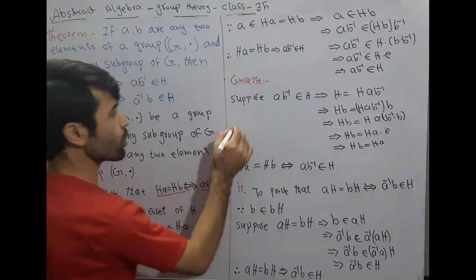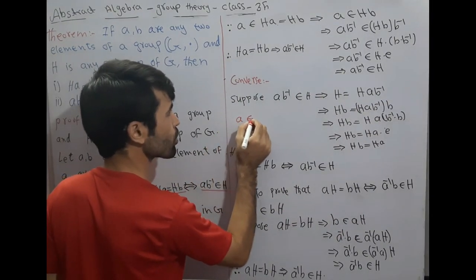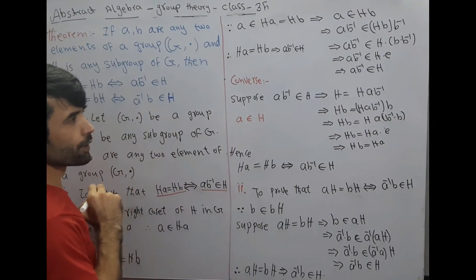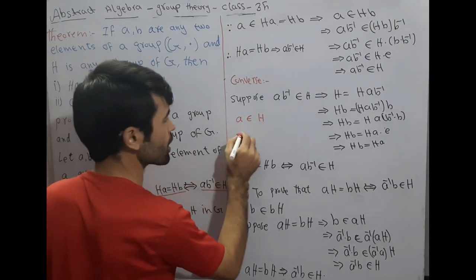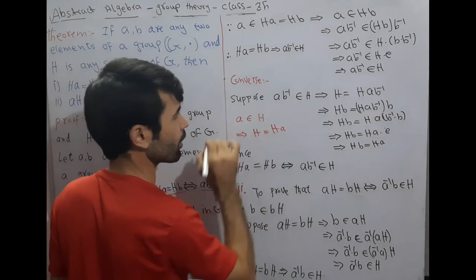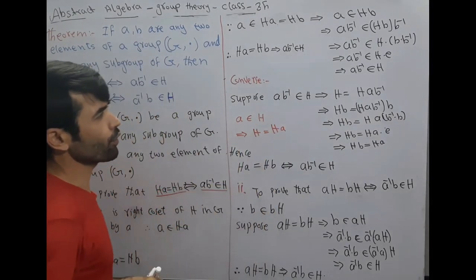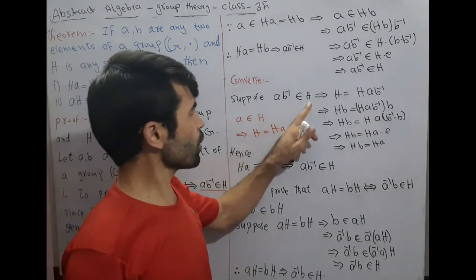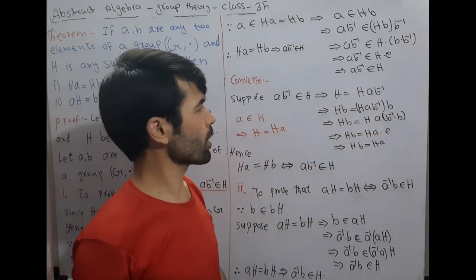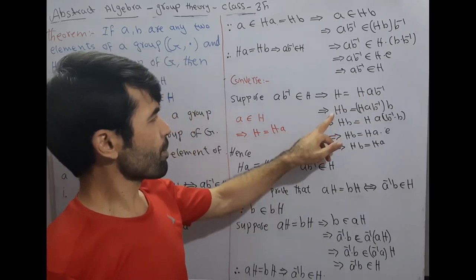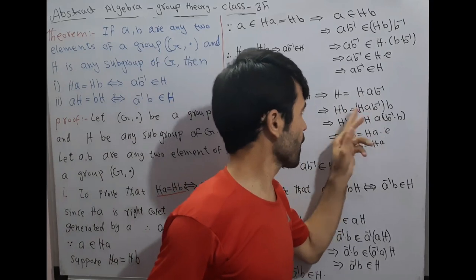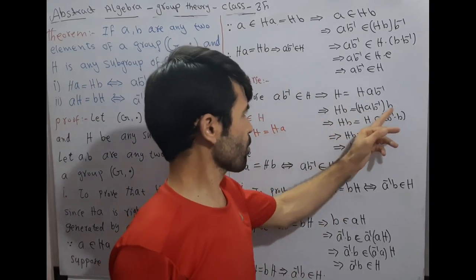We know that if an element belongs to H, then H = H times that element. Since a·b⁻¹ belongs to H, this implies H = H·a·b⁻¹. Now we multiply both sides by B.